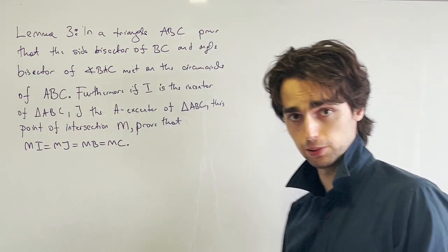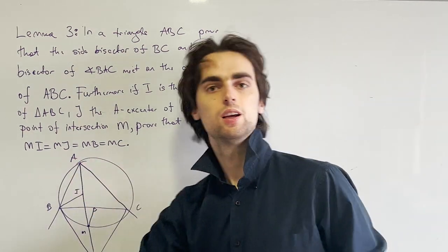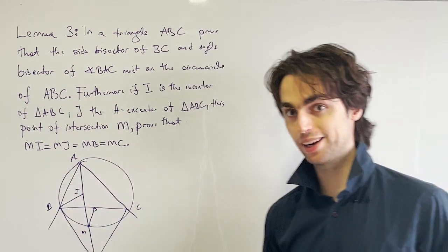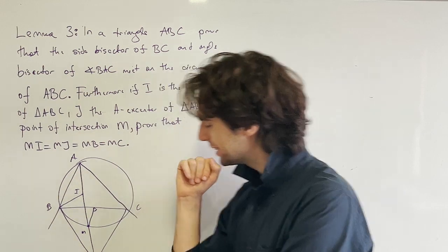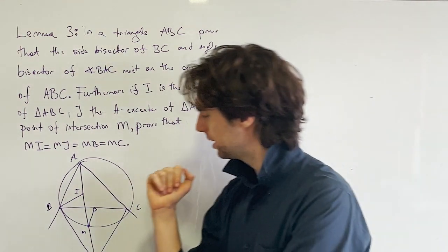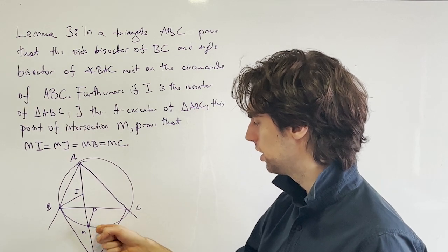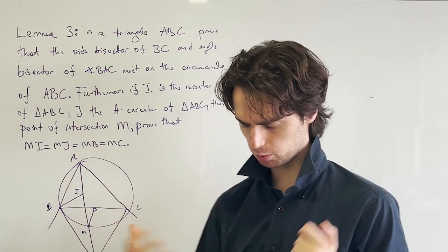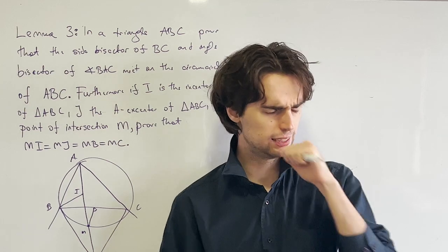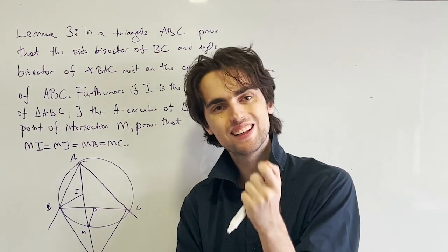So first things first, let's draw the diagram. Okay, so now we have the diagram and with this, first things first, with this problem the intersection of this angle bisector and the side bisector, we must prove that it is on the circumcircle. And that seems, to put it mildly, difficult.